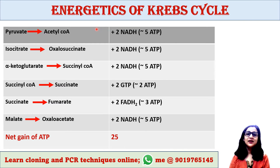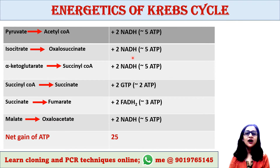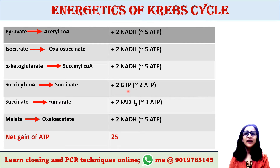During Krebs cycle, 2 molecules of NADH are produced when pyruvate converts into acetyl-CoA. 2 molecules of NADH are produced when isocitrate converts into oxalosuccinate. 2 molecules of NADH are produced when alpha-ketoglutarate converts into succinyl-CoA.